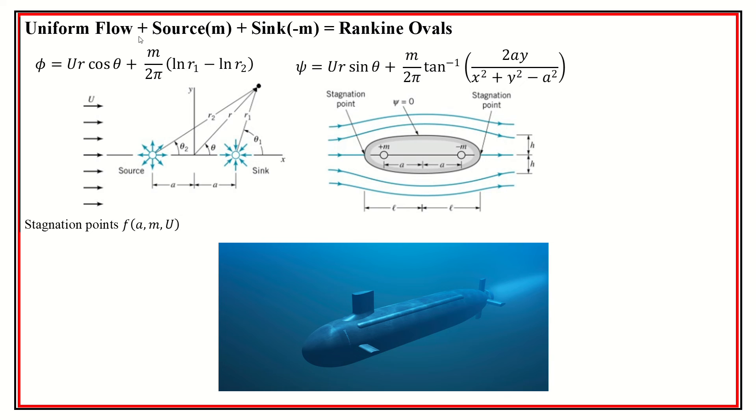And now what you can do also, you can take a source and a sink and a uniform flow, and you can make what's called a Rankine oval. And that looks a lot like a submarine, doesn't it? So you can try to describe, or maybe it's the ship and we're looking down at the water line, although it's not a great representation. But we now have an equation. We now have an equation for a streamline.